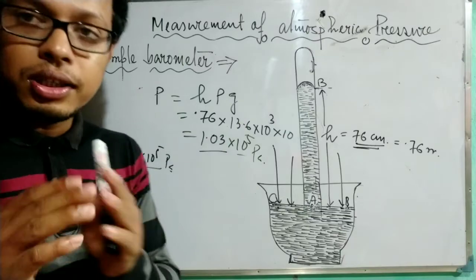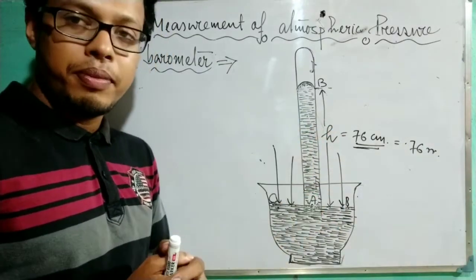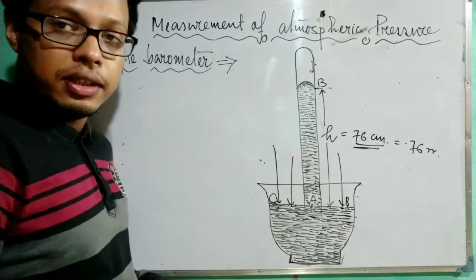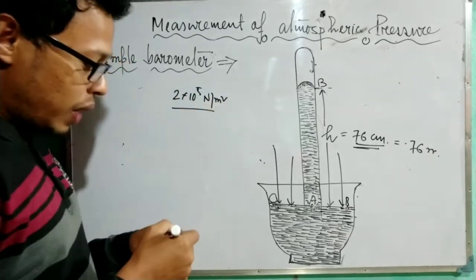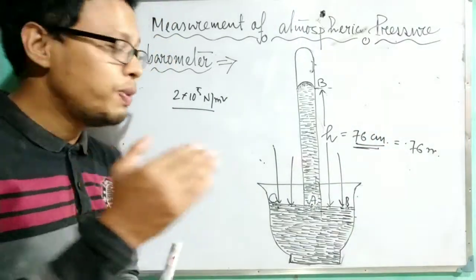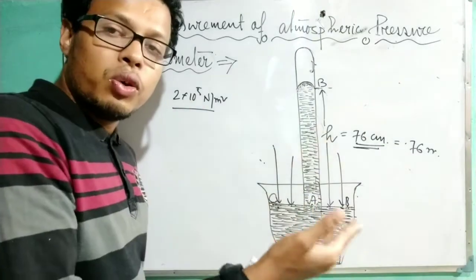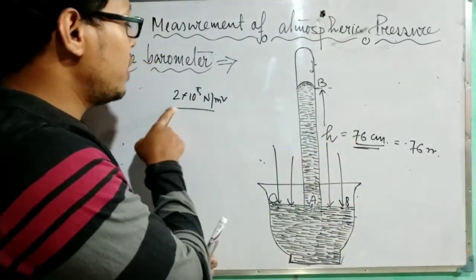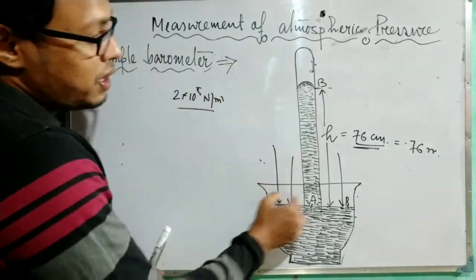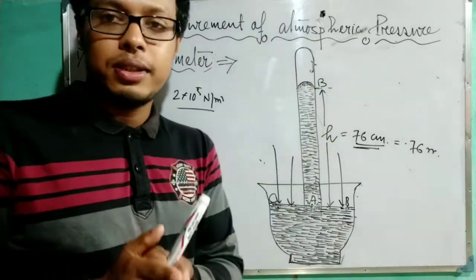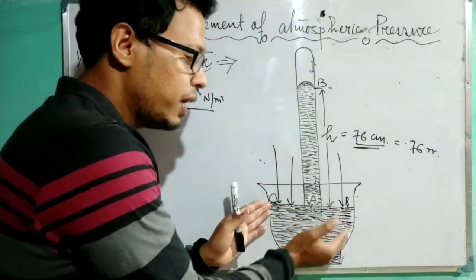The barometric height will change according to the atmospheric pressure. For example, if the atmospheric pressure at some place is 2 × 10⁵ Pascal, then at point A the pressure will also be 2 × 10⁵ Pascal, so the value of h will change accordingly. We can say the vertical height of the mercury column from the free surface of the mercury in the trough is the measure of the atmospheric pressure.